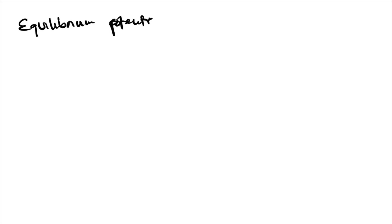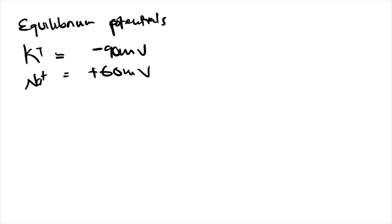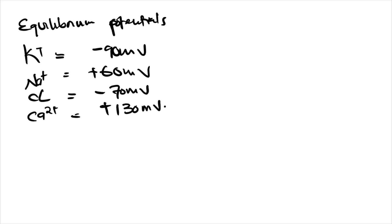For potassium, the equilibrium potential is negative 90 millivolts. For sodium, it is positive 60 millivolts. For chloride, it is negative 70 millivolts. For calcium, it is positive 130 millivolts. When you combine all these equilibrium potentials, you get the resting membrane potential, which is close to that of potassium because potassium movement determines the resting membrane potential.